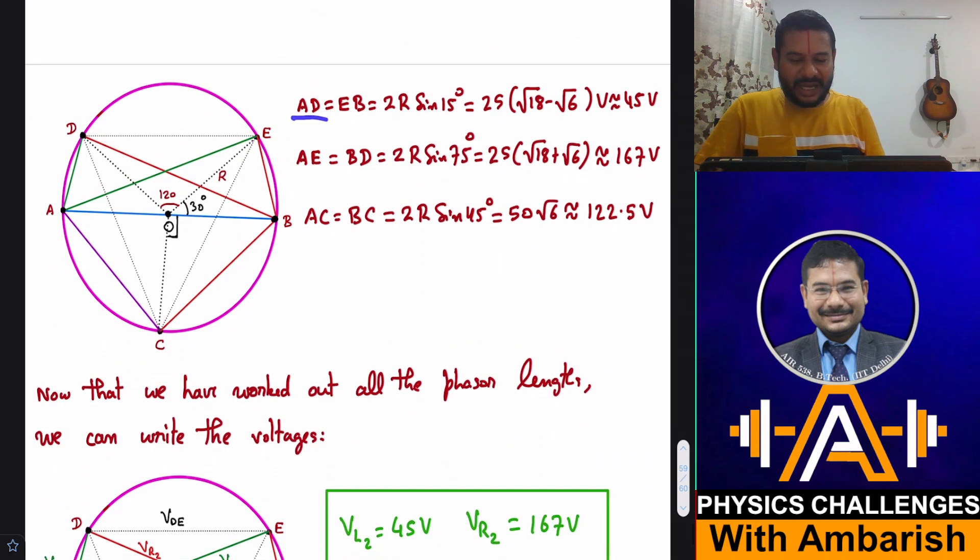Now coming to the other voltages, all these lengths we can work out easily. AD and EB both are equal and they are 2R sin 15 degree, and that's approximately 45 volts. You can just put in the value sin 15. Similarly, AE and BD both these things are equal. This is 2R sin 75 degree. This whole angle is 75 degree, and then you can draw normal over here. So this whole AE becomes 2R sin 75 degree because this whole angle is 150 degree. If you solve it, it's approximately 167 volt. And AC and BC both are equal to 2R sin 45 degree. That is 122.5 volts.